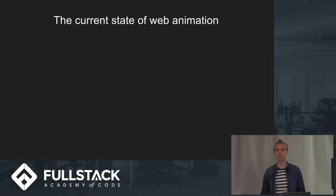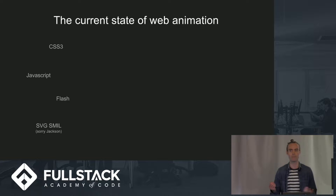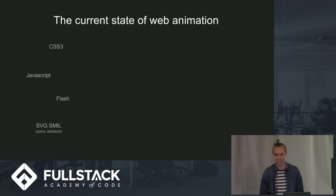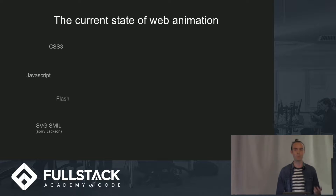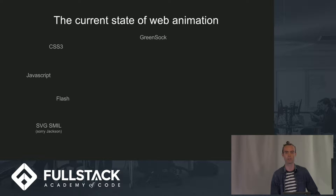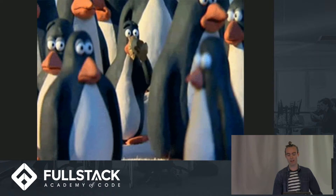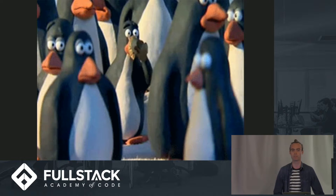Before we begin, I want to talk a little bit about the current state of web animation. Some of the big players are mainly CSS, JavaScript, Flash, and SVG SMIL, which unfortunately is now deprecated. But we also have other APIs such as GreenSock, VelocityJS, TweenJS, WebGL, and Purple Composer. There's definitely a lot, and it's easy to become stressed when you're trying to figure out which API is best for the project you're working on.